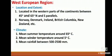West European Region - Location and Extent. It is located in the western parts of the continents between 45 degree and 65 degree north and south parallels. Norway, Denmark, Ireland, British Columbia, New Zealand etc. all fall in this West European region. Climate: mean summer temperature around 65 degrees, mean winter temperature around 5 degrees centigrade. Mean rainfall between 500 and 2500 millimetre.